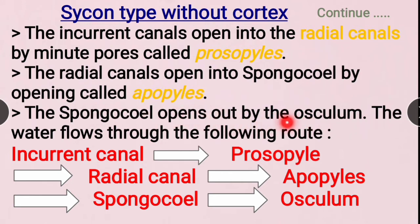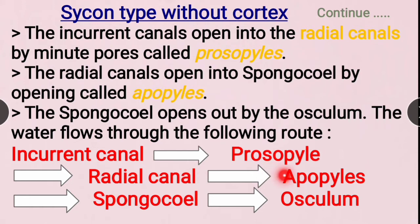The spongocoel opens out through the osculum. The water current pathway is: water enters the incurrent canals, passes through the prosopyles into the radial canals, then moves through the apopyles into the spongocoel, and finally exits through the osculum.